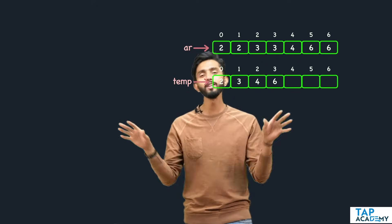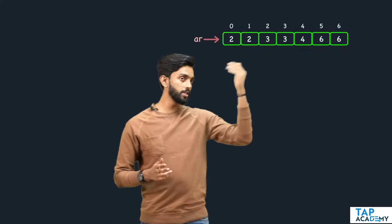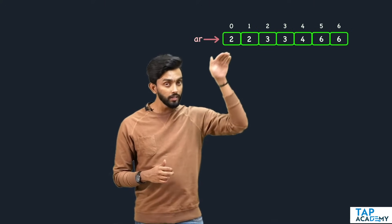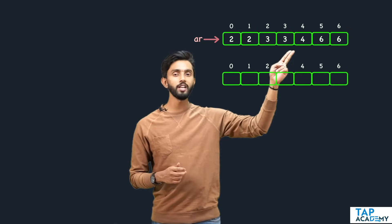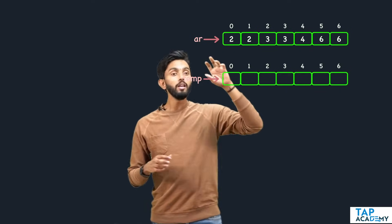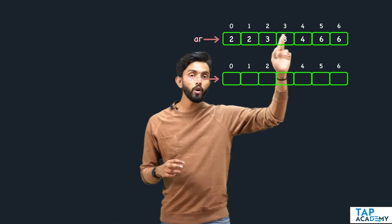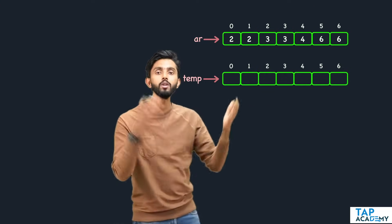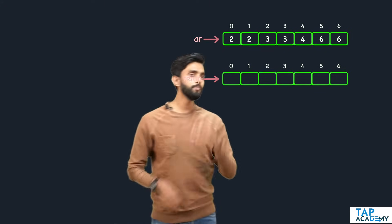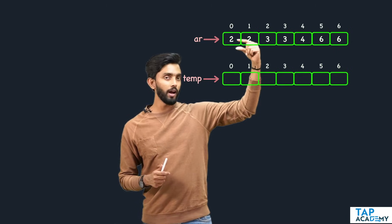Now how will you approach this? It's simple. Let's dive into the algorithm. Given the array, whatever the size of the array is, I will create another array of the same size — here size is seven — and I will call it 'temp'. Ultimately, temp is going to have all the unique elements, meaning duplicates are removed.